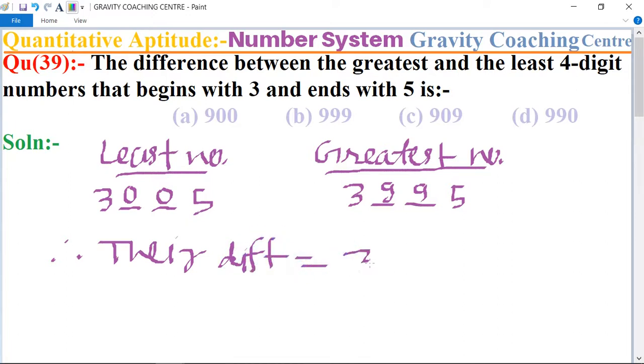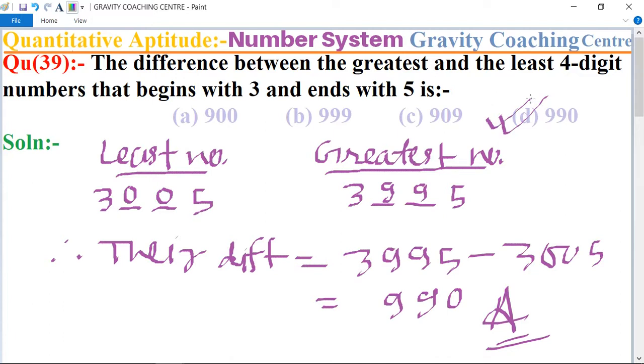Equals 3995 minus 3005, so its difference is 990, which is the required answer. 990, so option D is the correct answer.